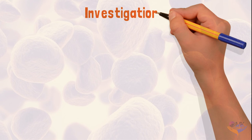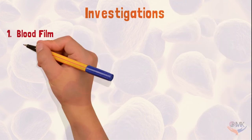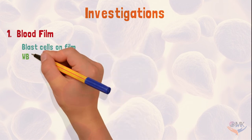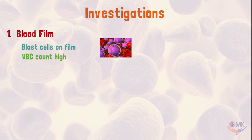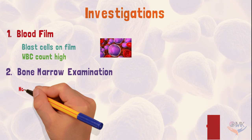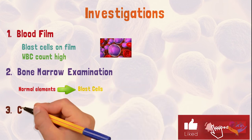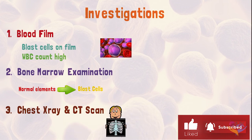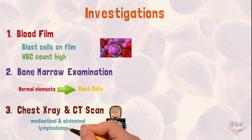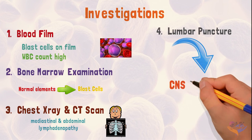Investigations done to diagnose acute lymphoblastic leukemia include blood film examination, where blast cells are seen and WBC count is usually high. On bone marrow examination, normal elements are replaced by blast cells. Chest X-ray and CT scan are done to assess mediastinal and abdominal lymphadenopathy. Lumbar puncture is required to confirm CNS involvement.